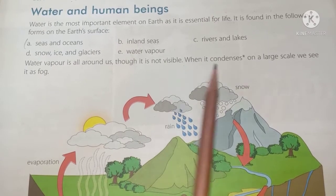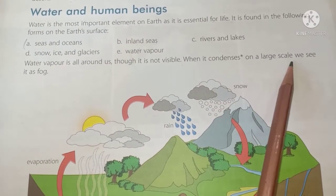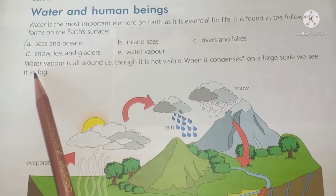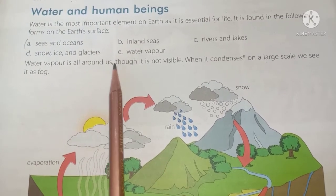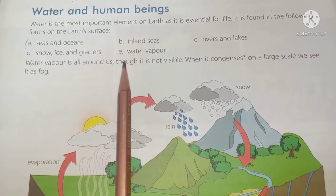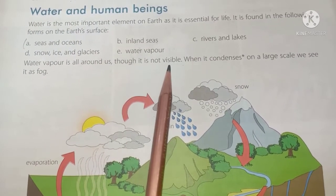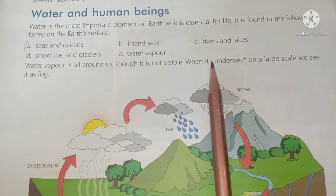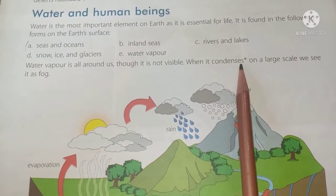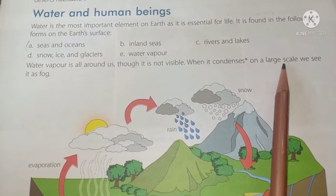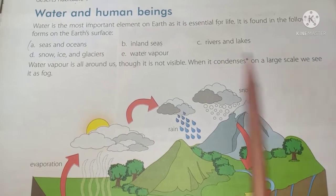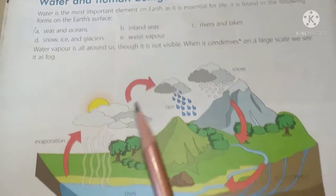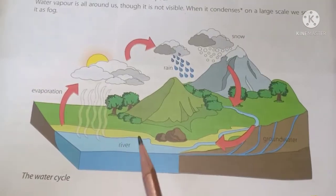Water vapor is all around us, though it is not visible. When it condenses on a large scale, we see it as fog. Water vapor is always present in our air but it is not visible — when it condenses and accumulates, it forms fog on a large scale.